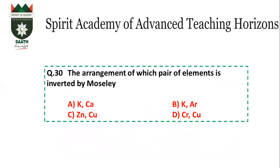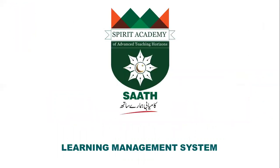Last question: Arrangement of which pair of elements is inverted by Moseley's law? The pair is potassium and argon. By mass, potassium (39) would come first and argon (40) later. But Moseley used atomic numbers — argon is 18 and potassium is 19 — so argon comes before potassium. The answer is B.